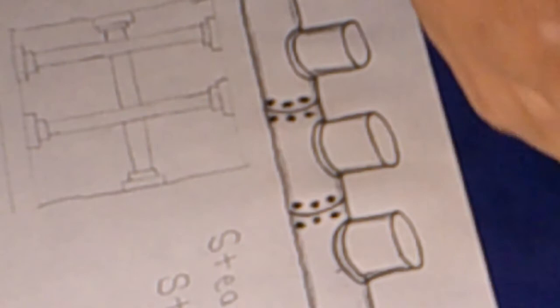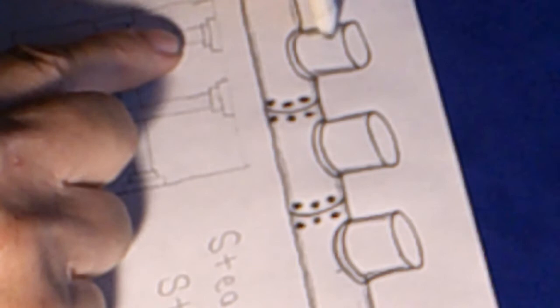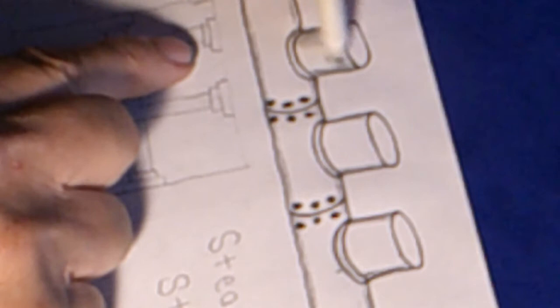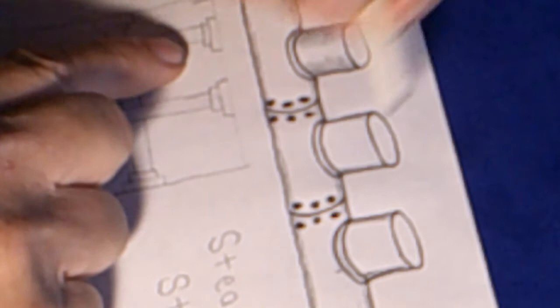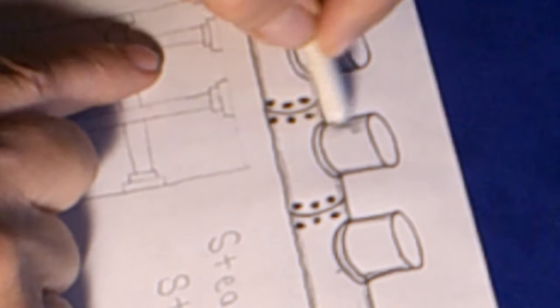And with the paper stump we're going to blend that out. Make sure not to go too far because you want to leave the center of the pipes white, and that gives them that third dimensional look.